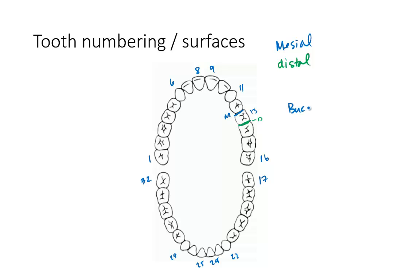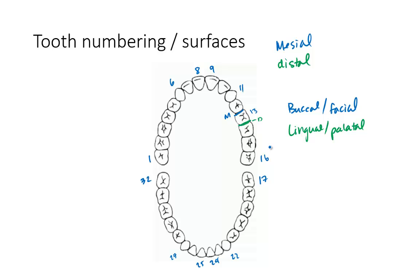Next we have buccal or facial, and also lingual and palatal. Buccal refers to the buccinator, so it's the surface closest to the cheek, and that refers to posterior teeth. Facial is the same thing except it's for anterior teeth. Lingual refers to the surface closest to the tongue, and it's for mandibular teeth, whereas palatal is for maxillary teeth. Essentially they're analogous to each other.